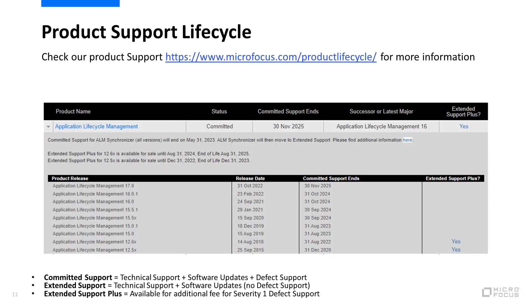Just to align on the support terminology: committed support means technical support, software updates, and defect support. Extended support means technical support and software updates only, with no defect support. All ALM and Quality Center releases for which committed support has ended are under extended support. For example, on August 31st, 2023, the committed support for release 15.0 will end, and no defect support will be provided anymore, just technical support and software updates only. Extended support plus is available for an additional fee for severity one defect support.